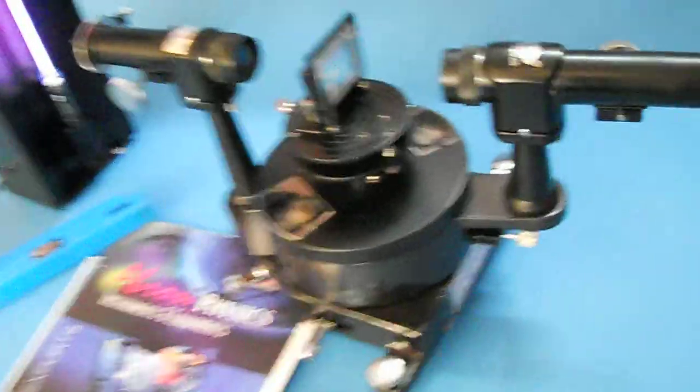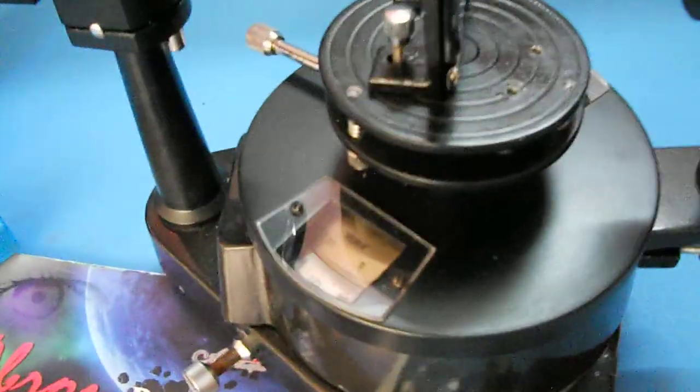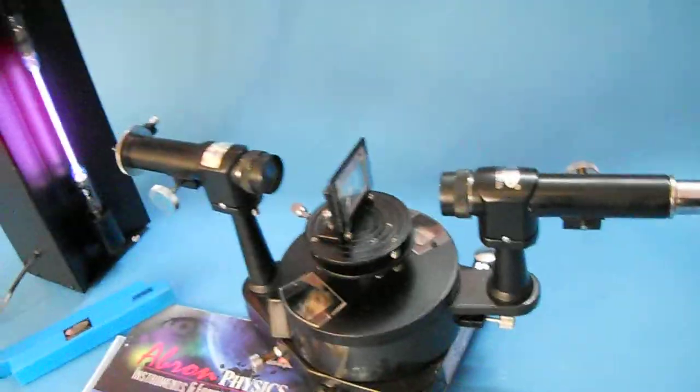The complete setup includes the diffraction grating, reading lens, 6-inch telescope, spectrometer, and achromatic lenses.